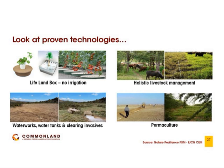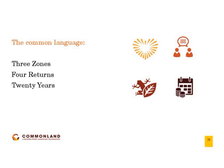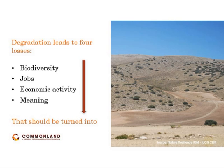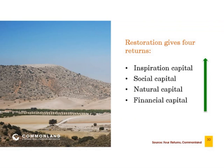I mentioned three zones for returns. When I look at many degraded landscapes, degradation leads to four sorts of losses: loss of biodiversity, eroded hill slopes, loss of jobs as people move to cities because there's no future in farming or local businesses, and loss of economic activity—which gives a loss of meaning. The challenge and opportunity is to turn that into the opposite. Restoration of landscapes provides four types of return: return on inspirational capital, return on social capital, return on natural capital, and return on financial capital.